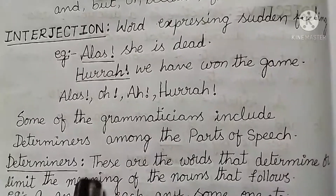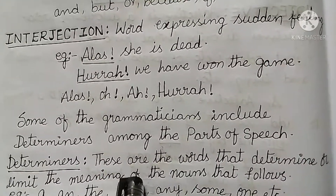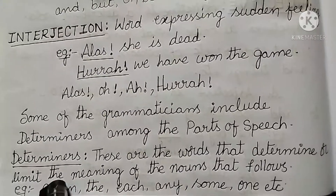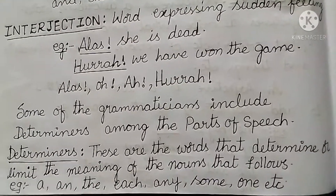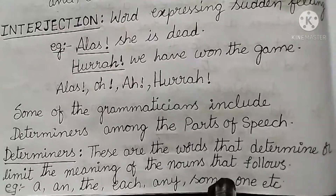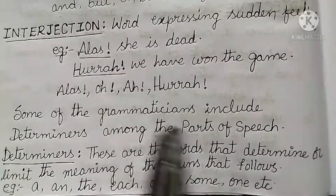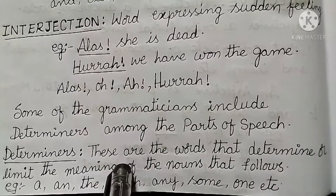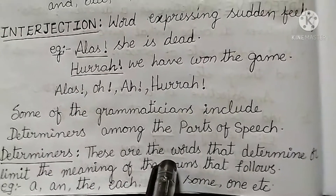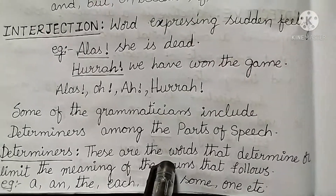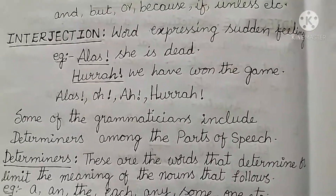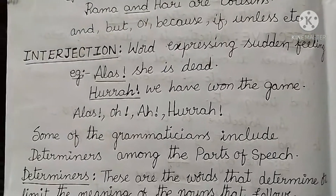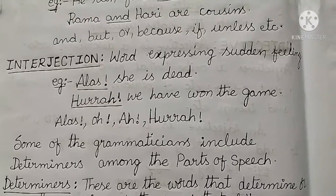Some grammarians also include determiners among the parts of speech. Determiners are words that determine or limit the meaning of the nouns that follow. Examples: a, an, the, each, any, some, one, etc. For example, 'a cup of coffee' or 'an umbrella' — they are limiting the meaning to that particular noun only.